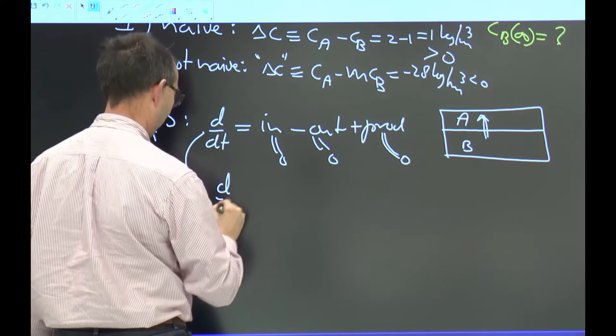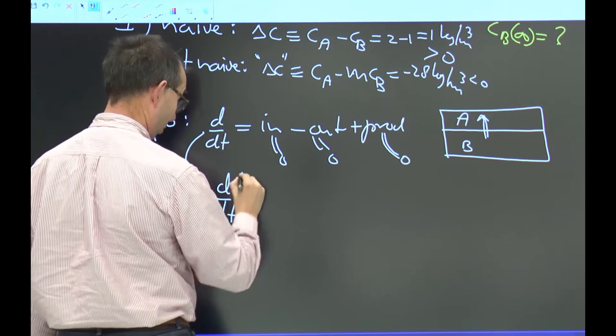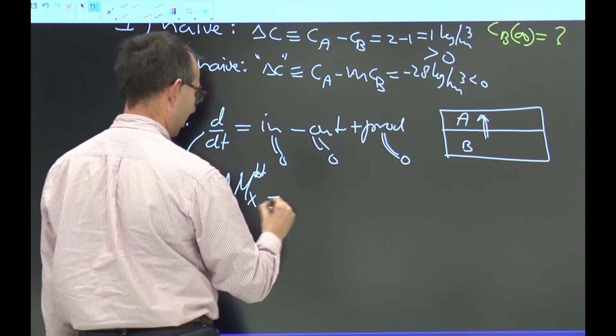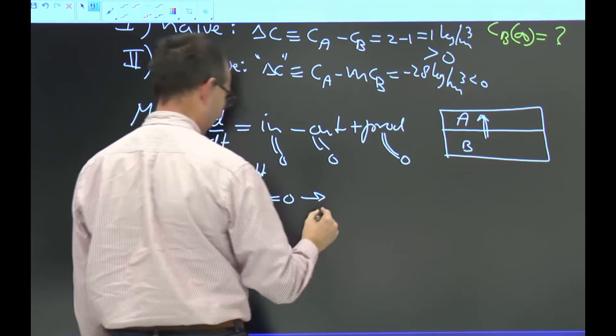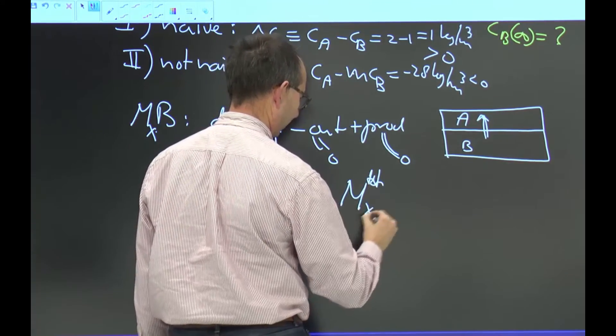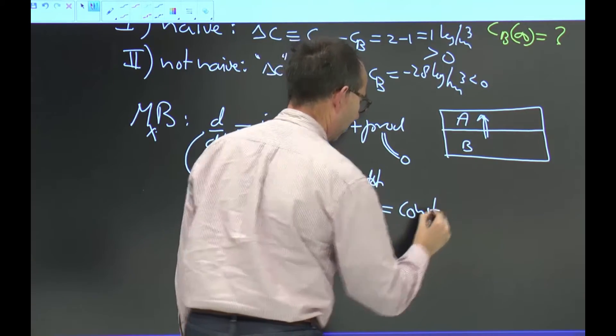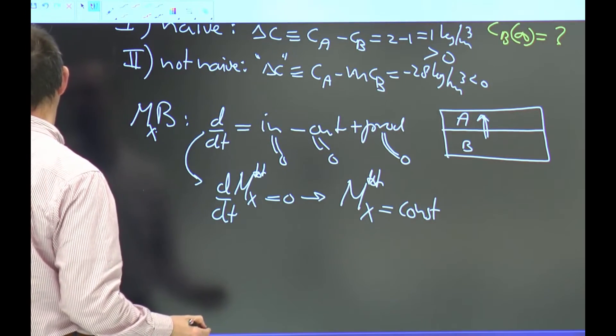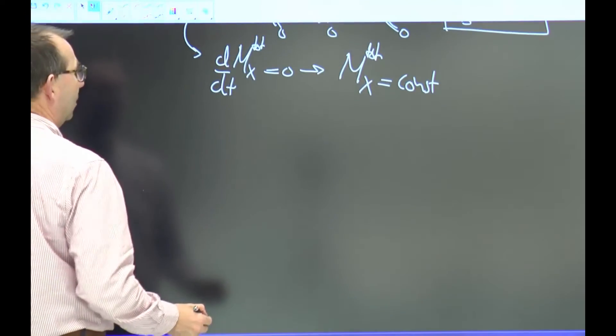So both in and out flow are zero. Hence, the d/dt of the mass of X total in the system is zero. Or the total mass in the system is conserved. Well, I guess you knew that. But this is a systematic way of doing it.